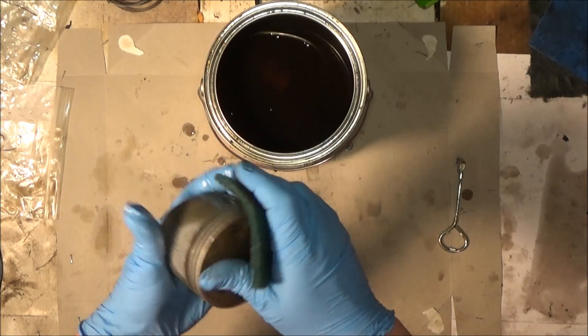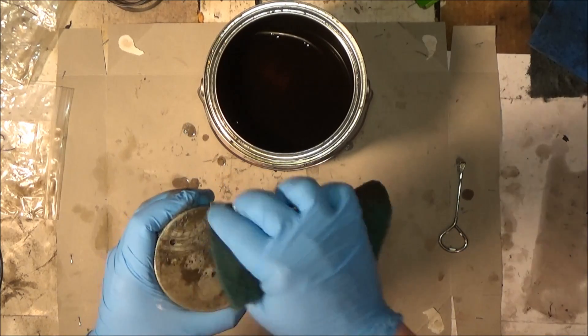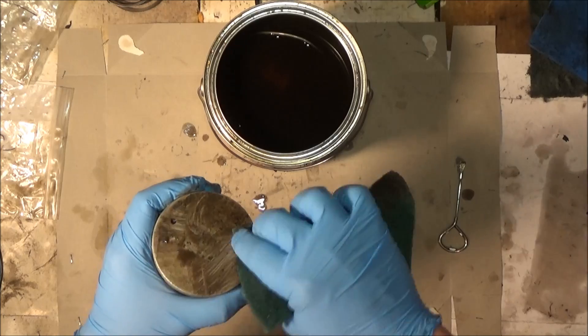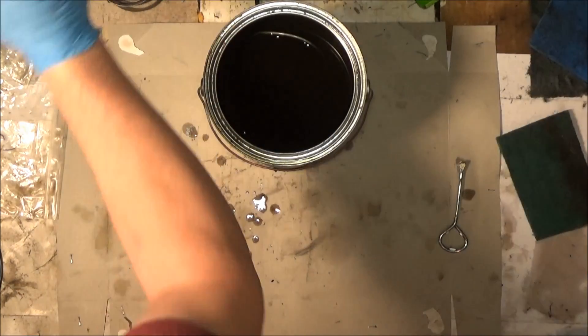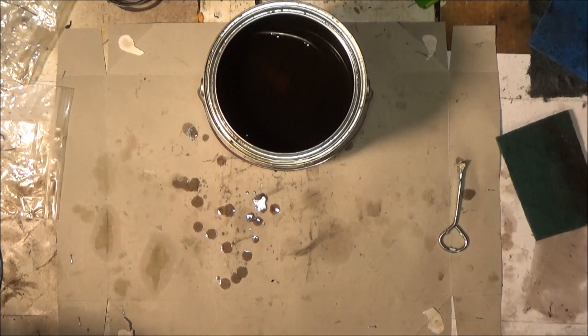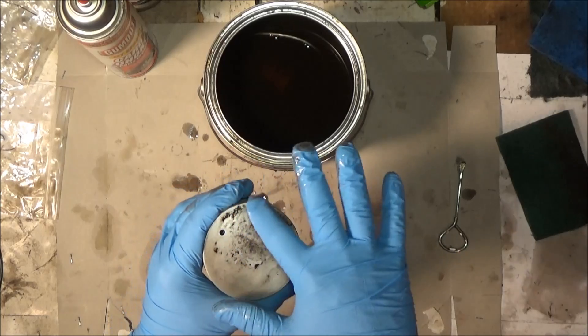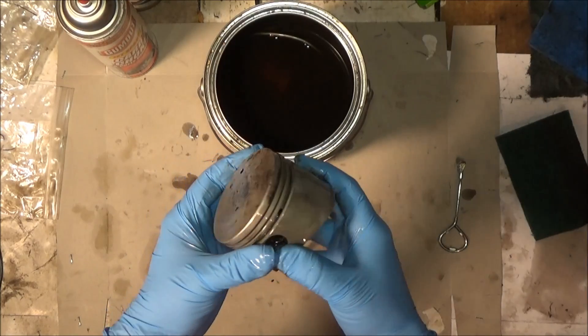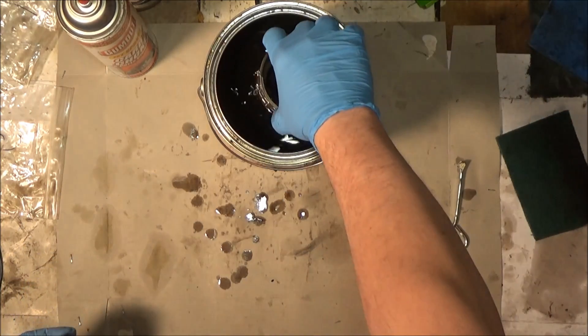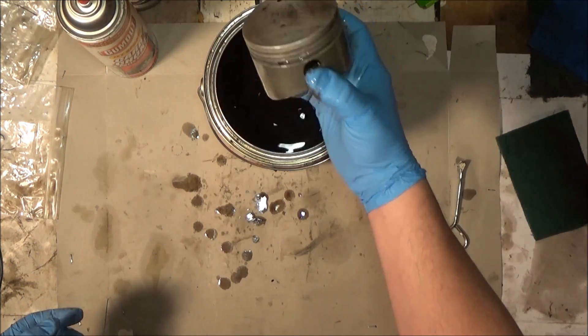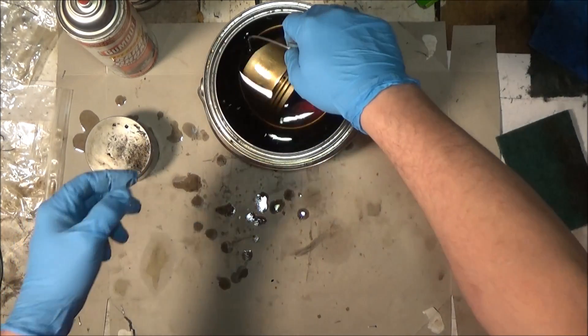I'm thinking get some scotch brite. Rinse that with some carburetor cleaner. There you can see there's a little bit left, but we're going to call that good. Whatever doesn't come up with scotch brite now can just stay on there. See what the other one looks like.